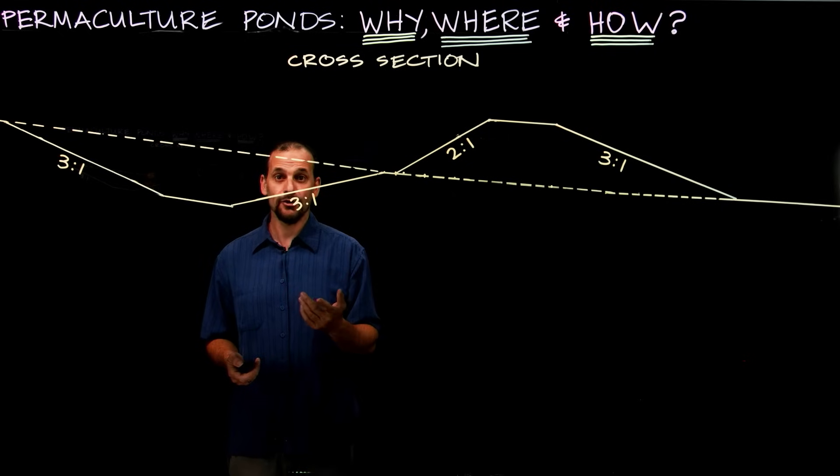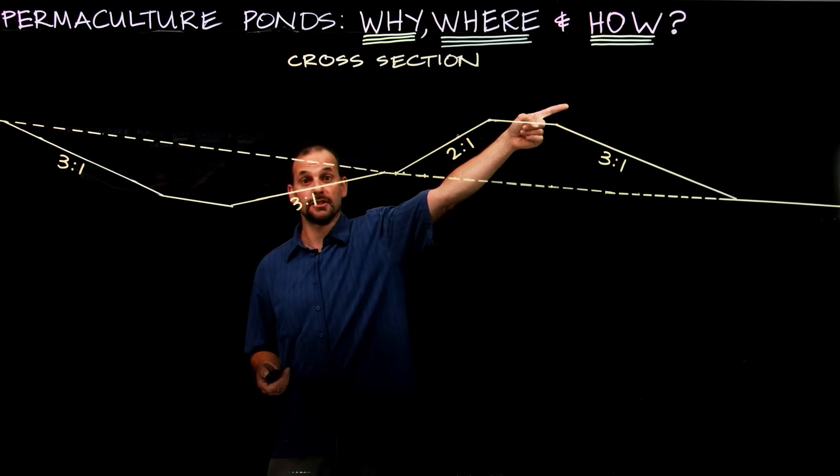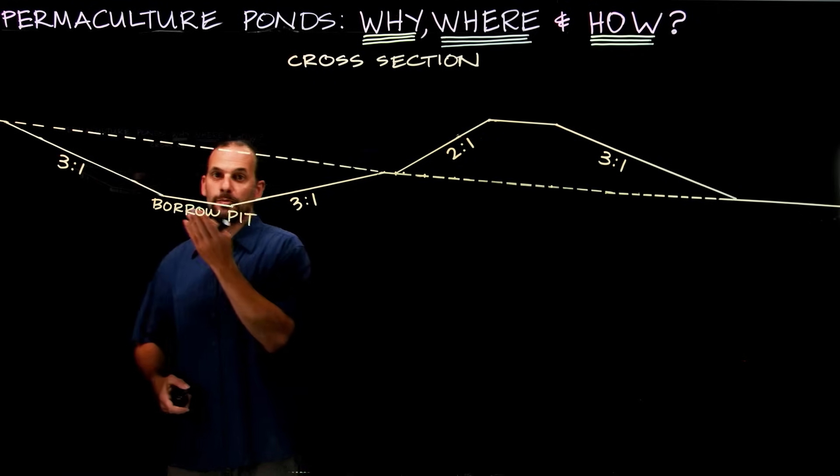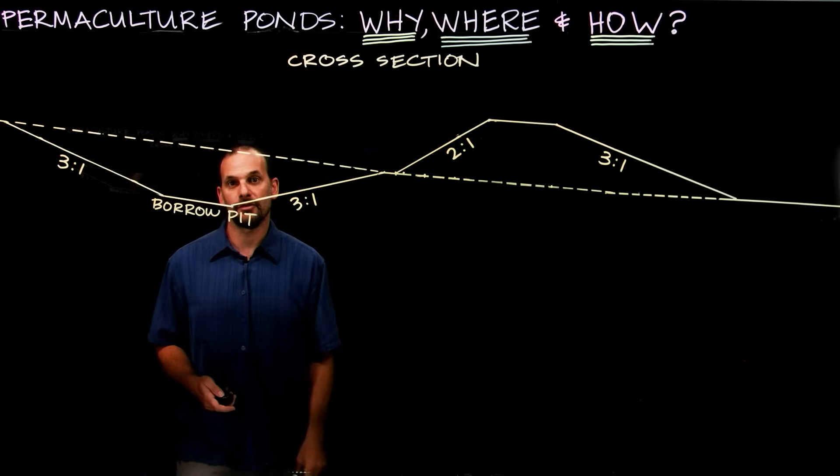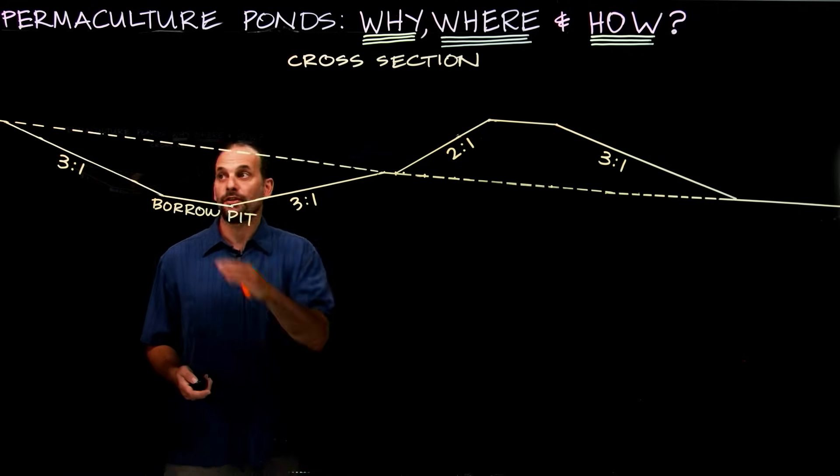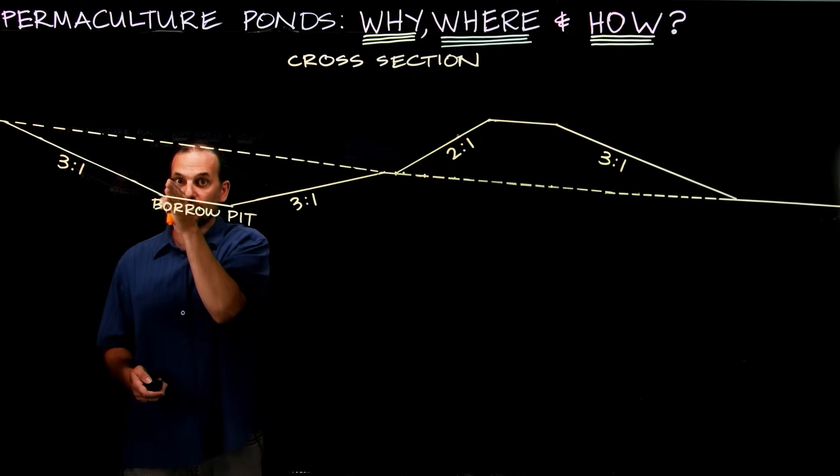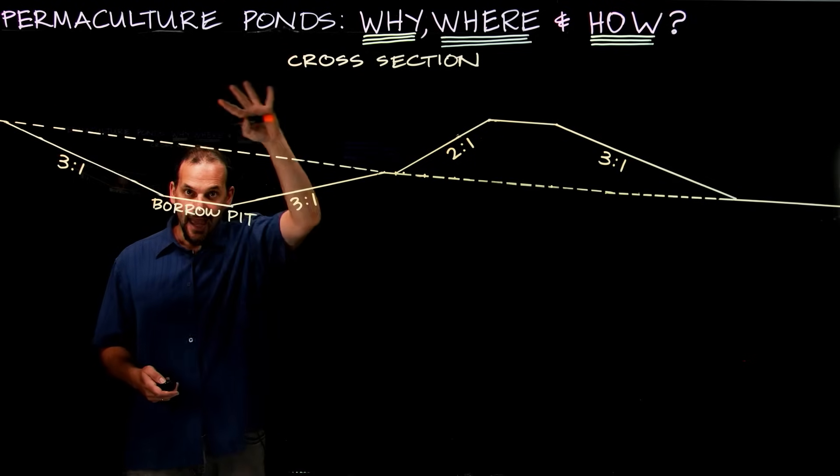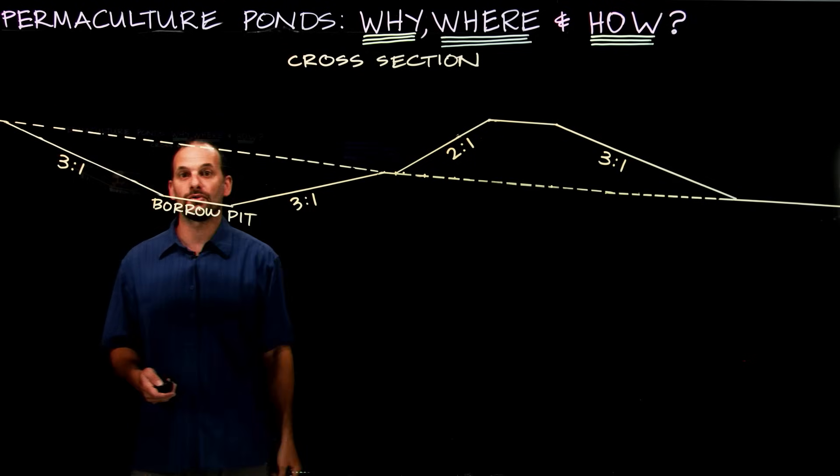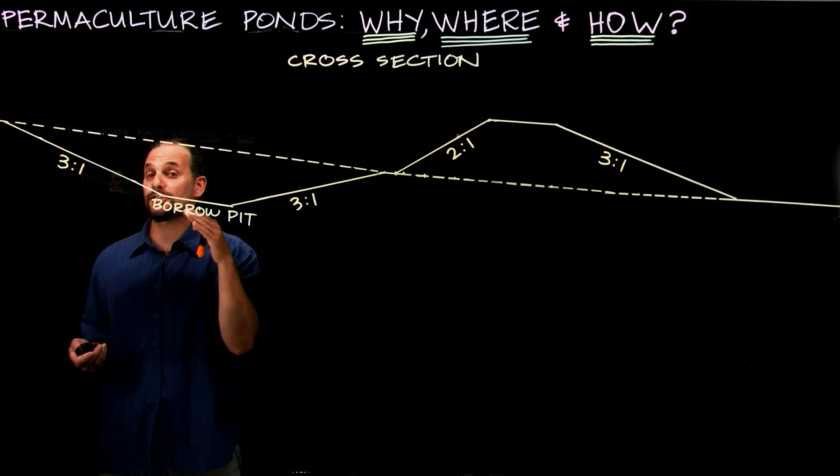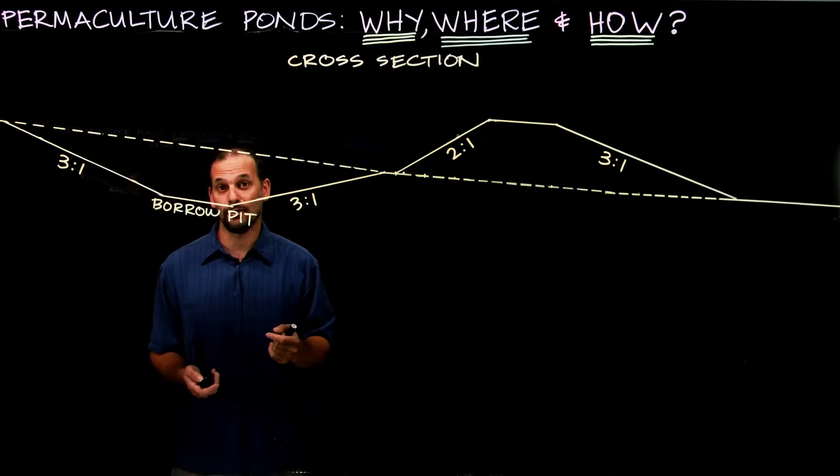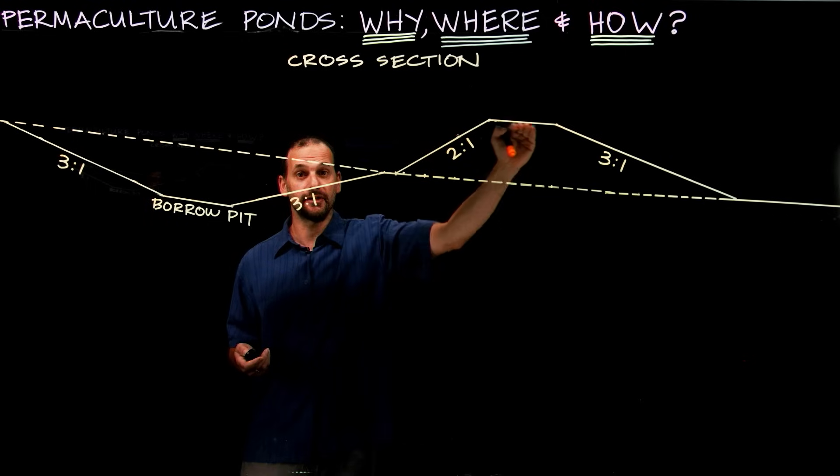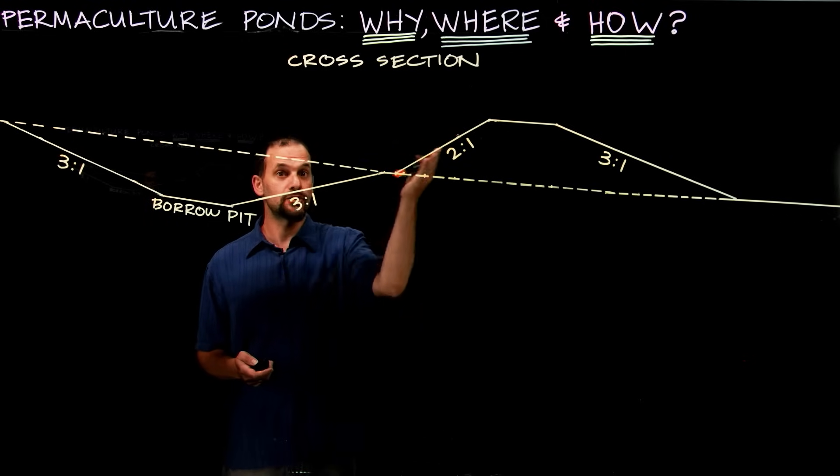So this hole right here is called the borrow pit, and its slope is typically not steeper than 3 to 1. That means three horizontal units to one vertical unit, because a machine has to drive in and out to excavate and move the soil. So if you're doing this by hand, then you could do whatever slope you want as long as it stays stable. Typically, the inside slope of the dam wall itself here is no steeper than 2 to 1.